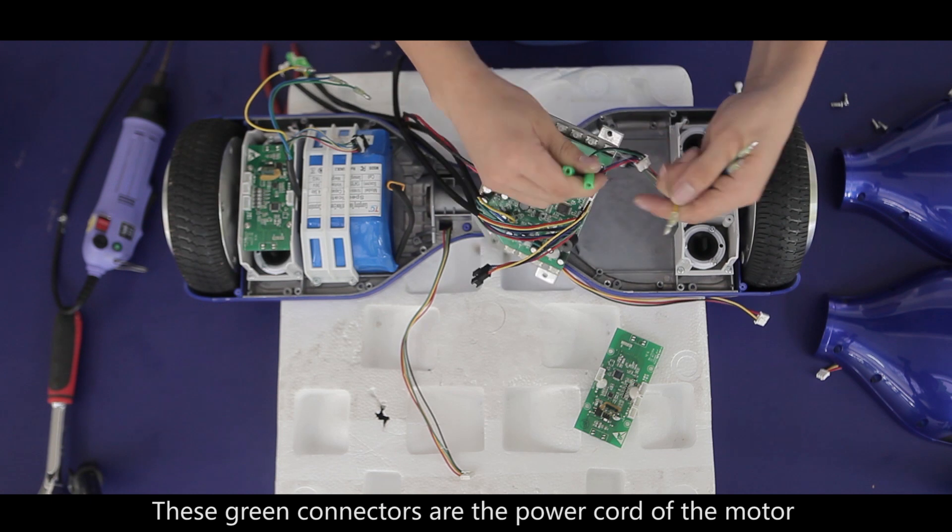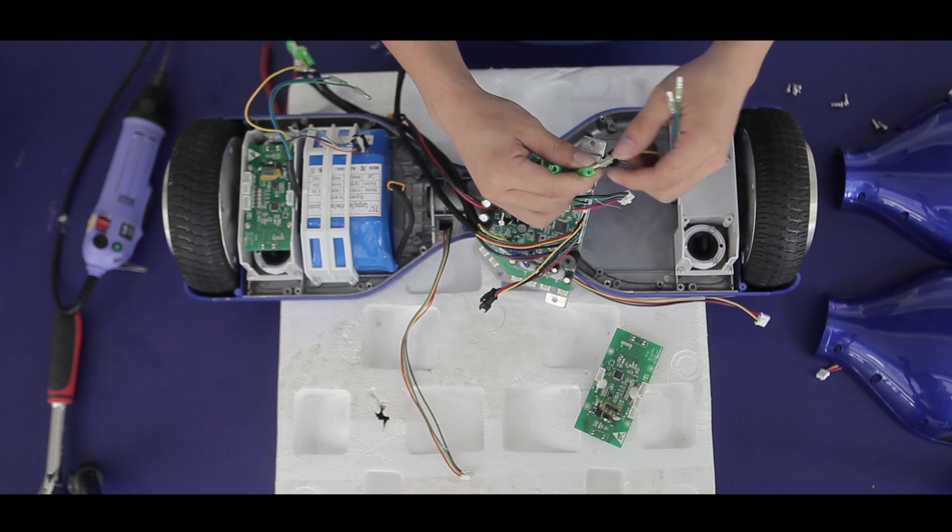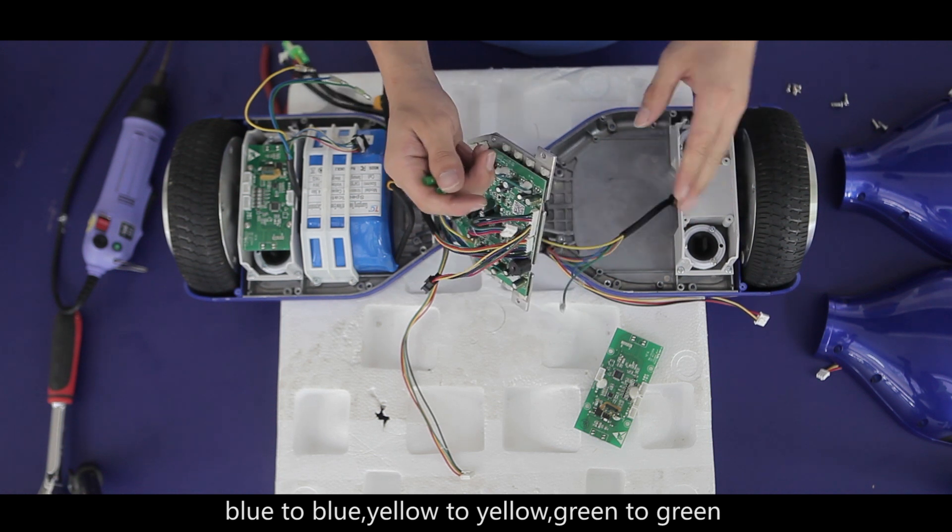These green connectors are the power cord of the motor, which are mainly to control the voltage passed to the motor: blue to blue, yellow to yellow, green to green.